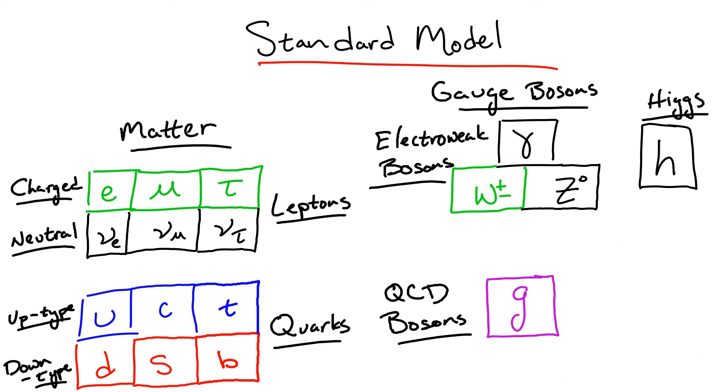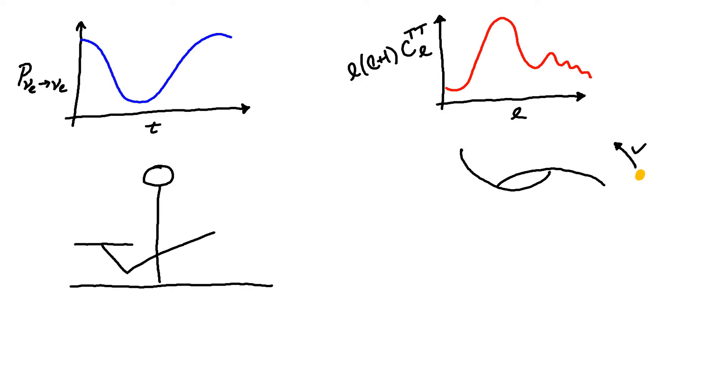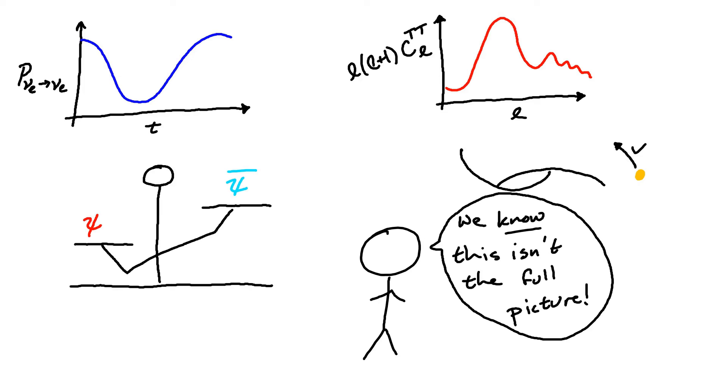However, although the standard model has proven itself to be incredibly predictive for the universe we live in, we know that it can't be complete. Observations such as neutrino masses and dark matter seem to indicate that the standard model must be extended in some yet unknown manner. However, with that said, I hope that this series has given insight into not only the structure of the standard model, but the motivations behind the different components as well as the beauty of the model as a whole.